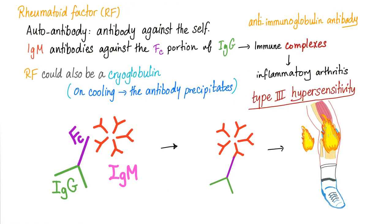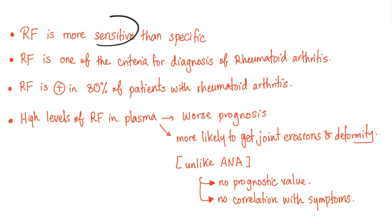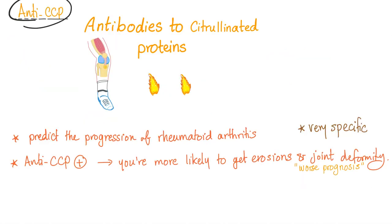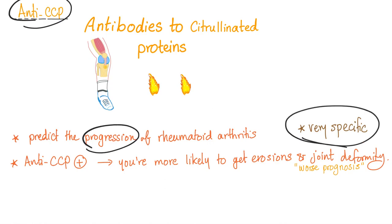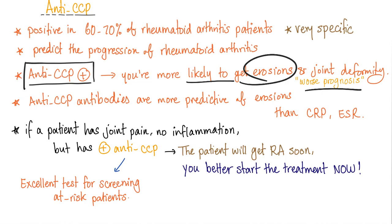To diagnose rheumatoid arthritis, there are many criteria. Rheumatoid factor is usually positive — it represents IgM antibodies against the Fc portion of IgG. Rheumatoid factor is more sensitive, and when very high it carries a worse prognosis and correlates with symptom severity. Anti-CCP can also be positive; it is specific and predicts disease progression. If anti-CCP is positive, you are more likely to develop erosions and joint deformities, carrying a worse prognosis.